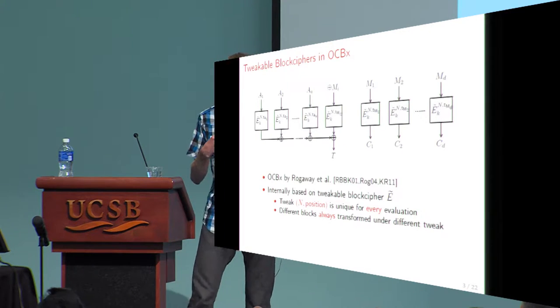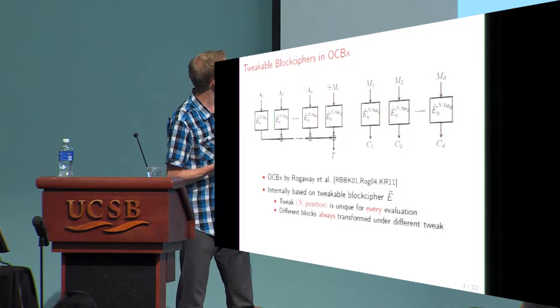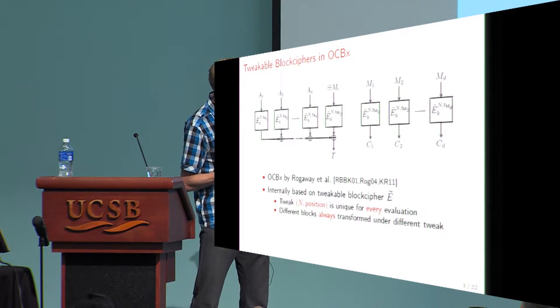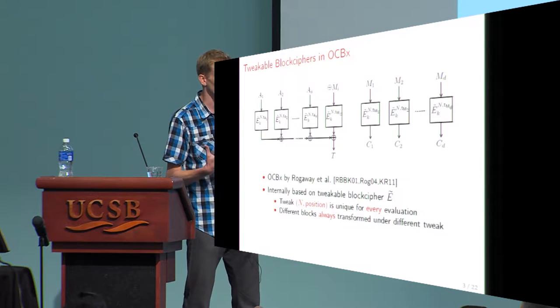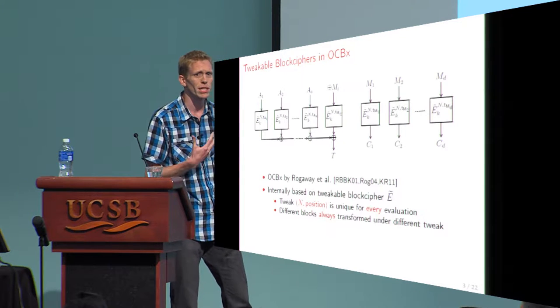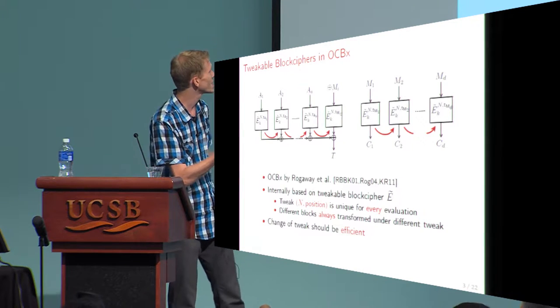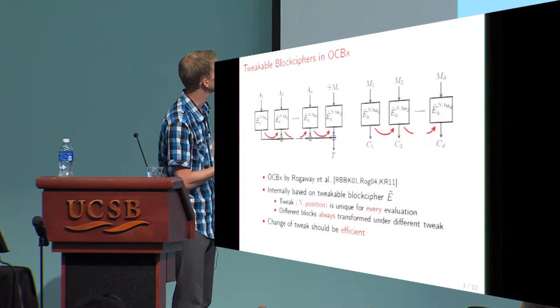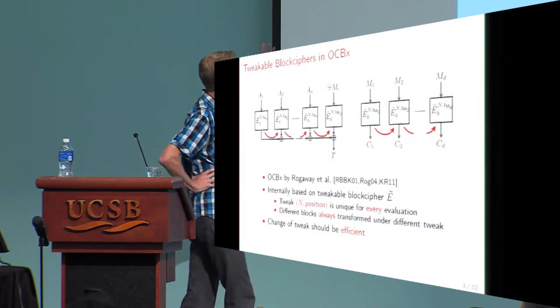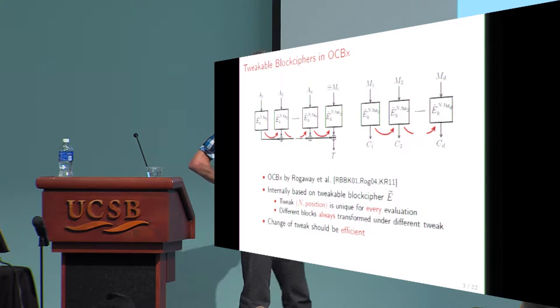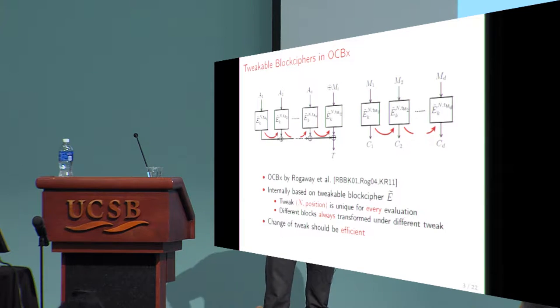The nonce is a unique value for every encryption, and the position identifier uniquely determines at which position the tweakable block cipher appears. Because it is a tweakable block cipher, every new evaluation is done under a different tweak. You get independent-looking tweakable block ciphers everywhere, and you can easily prove security of the scheme. Note that by changing the tweak, you're essentially changing the function, so there is a side condition: changing the tweak should be very efficient.